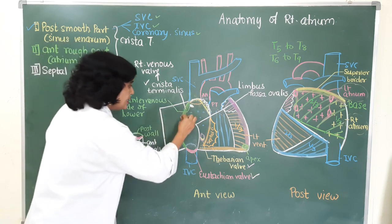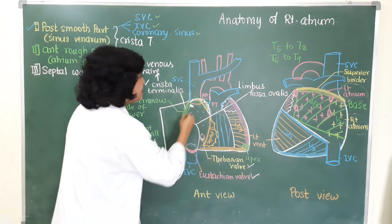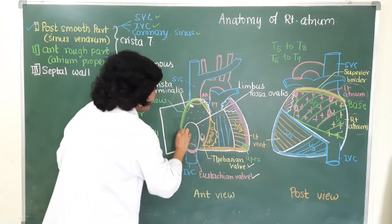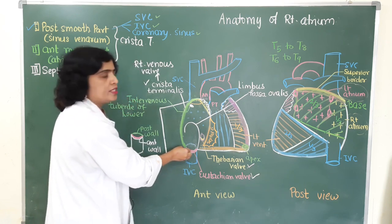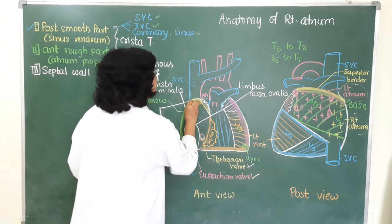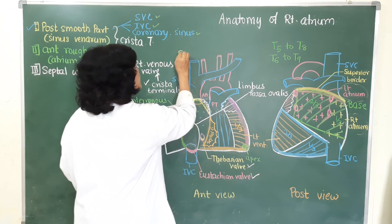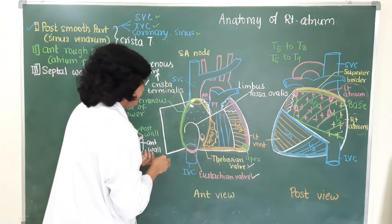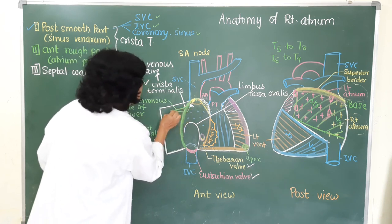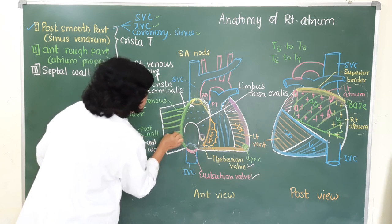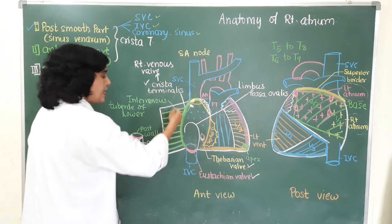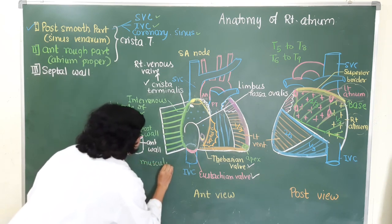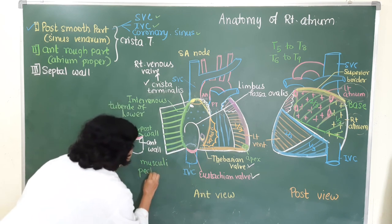The anterior rough part lies in front of the crista terminalis. The crista terminalis is a muscular elevation that coincides with the sulcus terminalis; it starts from the superior vena cava and ends at the right horn of the eustachian valve. The uppermost part of the crista terminalis, near the superior vena cava, contains the SA node — the pacemaker of the heart. From the crista terminalis, numerous muscular ridges extend forwards towards the right atrioventricular orifice, giving the appearance of the teeth of a comb.